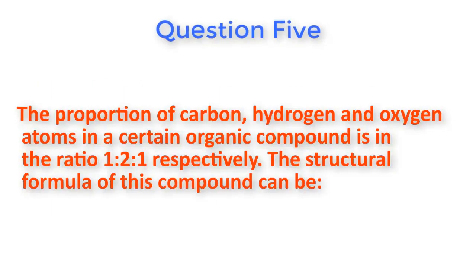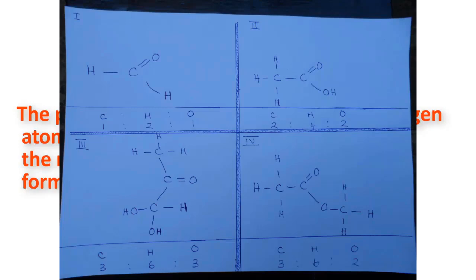Question number five: The proportion of carbon, hydrogen, and oxygen atoms in a certain organic compound is in the ratio one to two to one, respectively. The structural formula of the compound can be — the structures are shown on the screen.